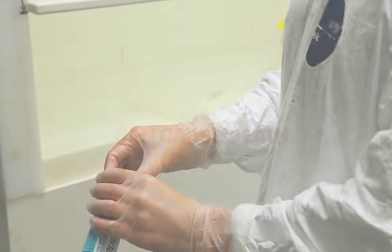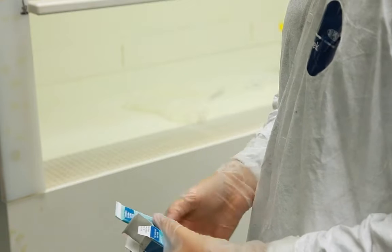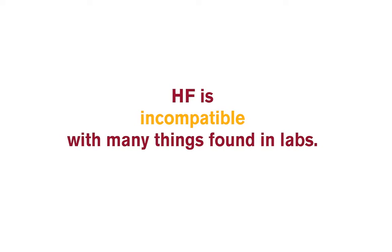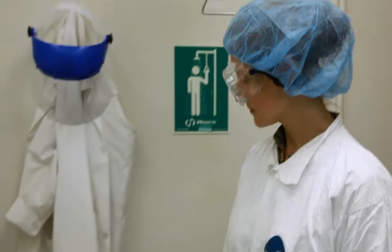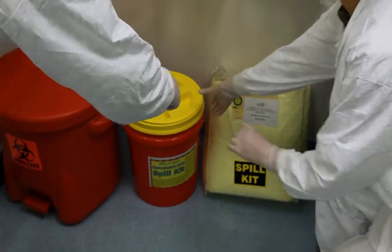Therefore, exposure prevention is key and if exposed, immediate medical treatment is critical to avoid severe health effects. HF is incompatible with many things commonly found in labs. HF attacks silica-laden materials such as glass, clay, pottery, and concrete. For the same reason, the yellow laboratory spill kits cannot be used for HF spill control.